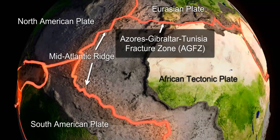The Azores-Gibraltar-Tunisia zone of fracture starts at the Mid-Ocean Ridge at the Azores Triple Junction — a triple break-in point — and moves in an eastward direction between the Eurasian plate and the African plate, connecting into the Mediterranean and moving on into the Middle East, as you can see on the far right of this image.